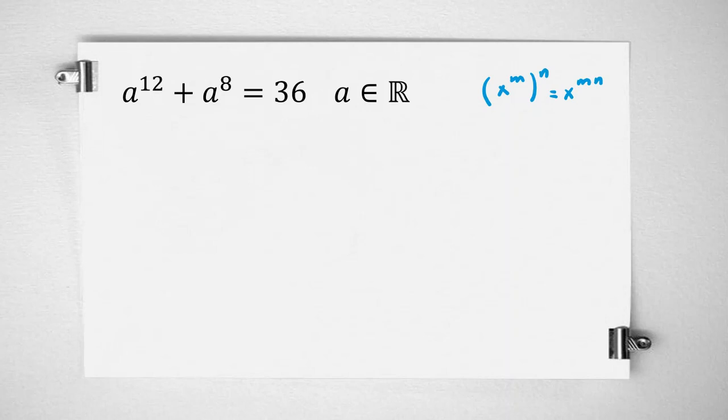So the first one is a to the 4 to the power of 3, because 4 times 3 is 12, and the second one is a to the 4 squared equal to 36. You can consider a to the 4 equal to b, so b cubed plus b squared equal to 36.